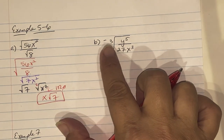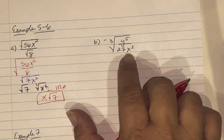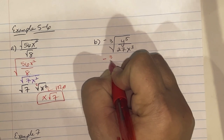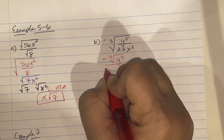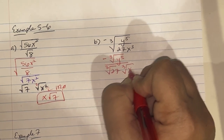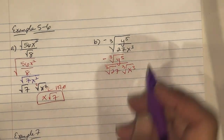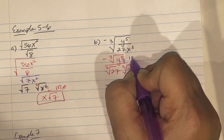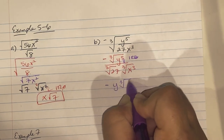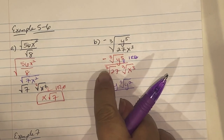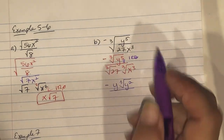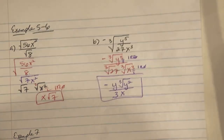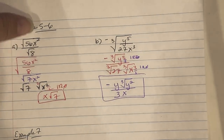Part b: simplify −∛(y⁵ / 27x³). Separate each piece: −∛(y⁵) / ∛27 / ∛(x³). For y⁵: 5 ÷ 3 = 1 remainder 2, so y comes out and y² stays in. ∛27 = 3. For x³: 3 ÷ 3 = 1 remainder 0, x comes out completely. Final answer: −y∛(y²) / (3x).